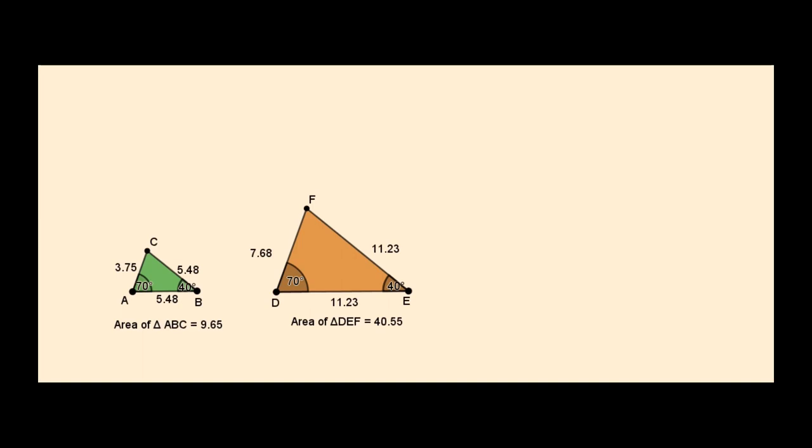Let us learn a property on similar triangles. The ratio of areas of two similar triangles is equal to the square of the ratio of their corresponding sides.